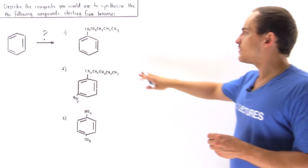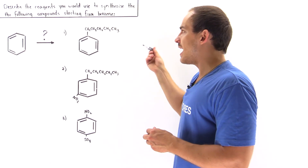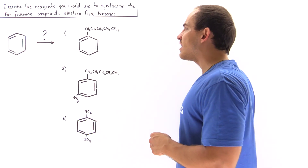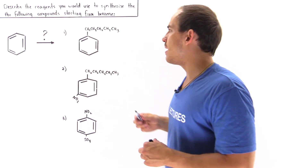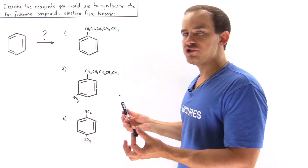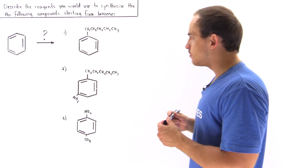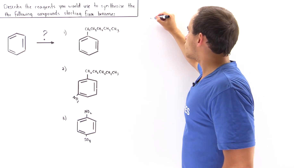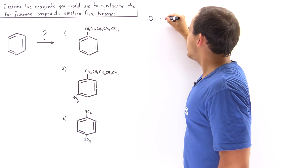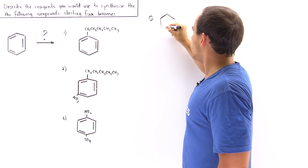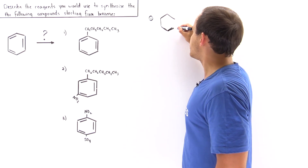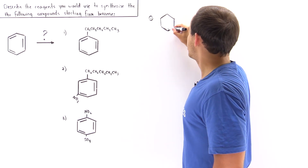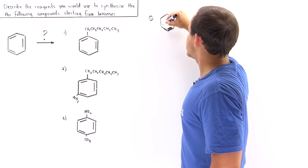The first thing to notice about this product is that this substituent — this hydrocarbon group — is a straight-chain hydrocarbon. That means whatever pathway we take from benzene to this mono-substituted benzene, no rearrangement on this chain has to take place. This tells us we cannot use the Friedel-Crafts alkylation reaction, because Friedel-Crafts alkylation always leads to rearranged products in which the chain group is rearranged.